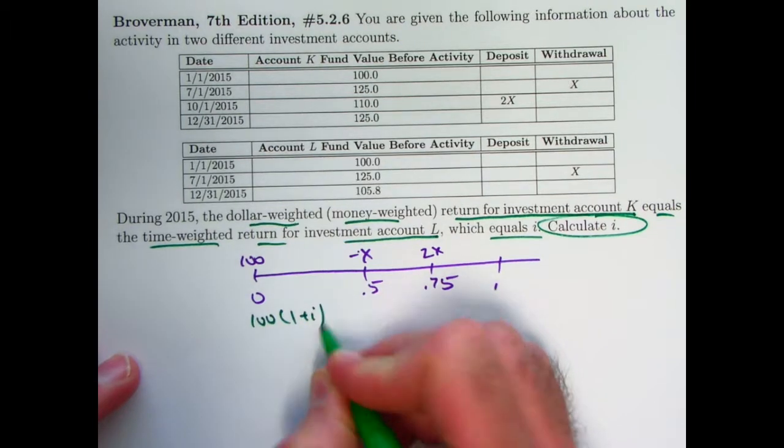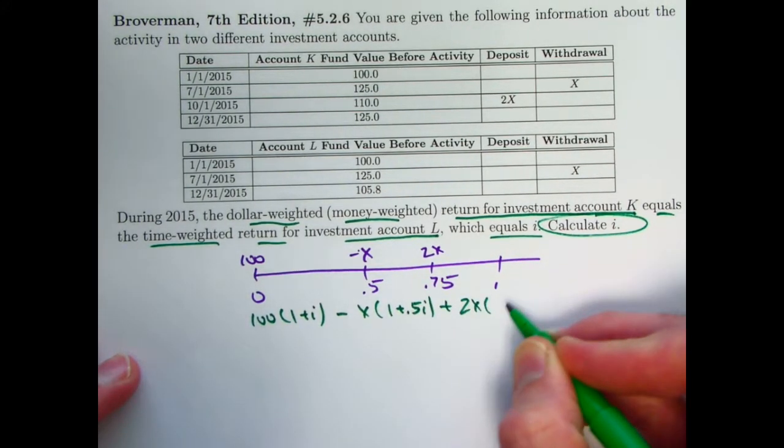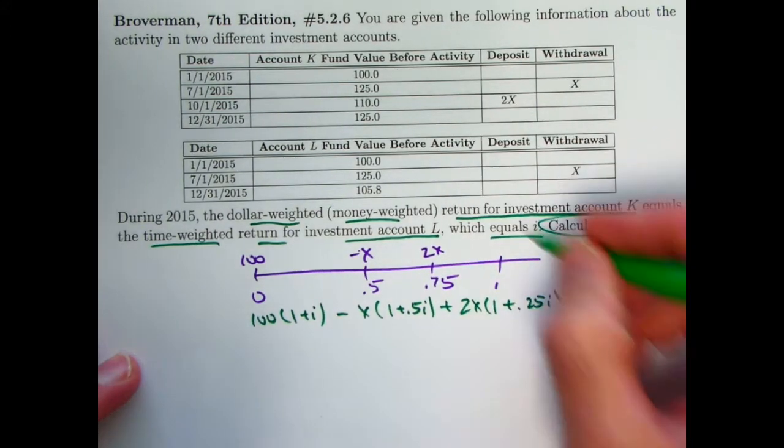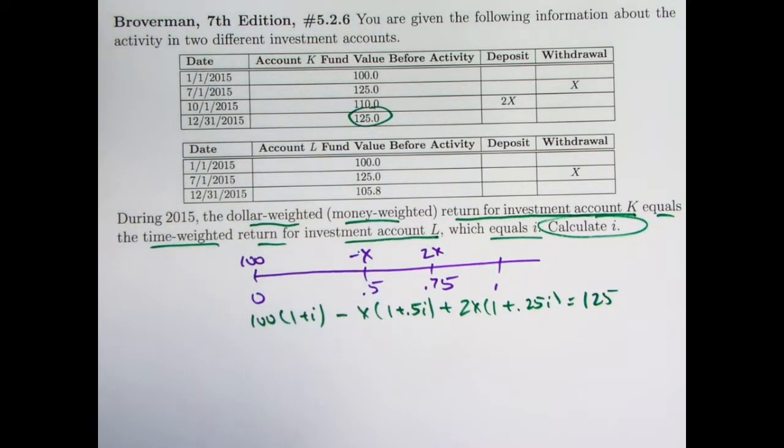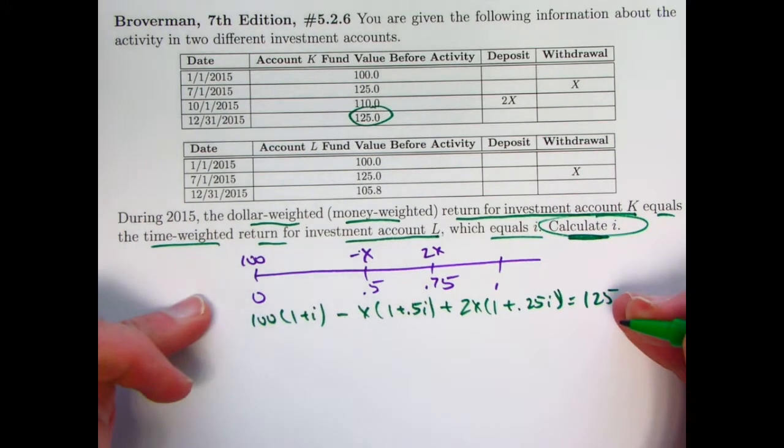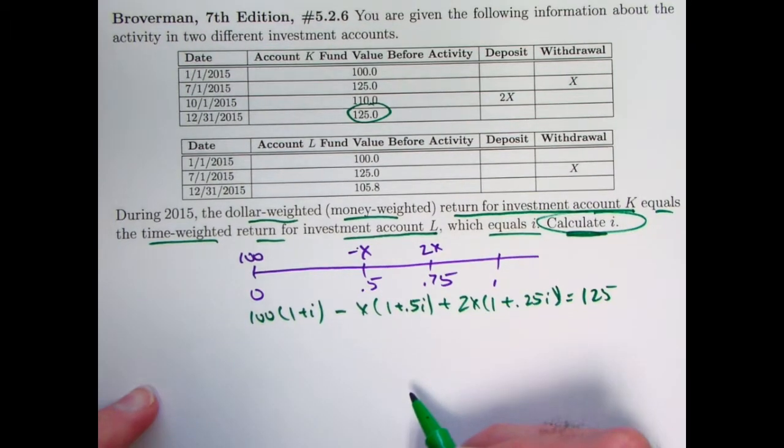That would be the equation of value for this one. I could also write down an equation giving us what i is for the second one in terms of x. The goal is to solve for i. So if you think about it, in each case if you could solve the resulting equation for x in terms of i, you can set those results equal to each other and hopefully solve for i. I'll say that again. Since the goal is to calculate i, we've got an equation relating x and i here. I could solve for x in terms of i here and also based on account L. Set those things equal to each other because they both equal x. Solve the resulting equation for i. Let's go ahead and simplify this before we think about account L.